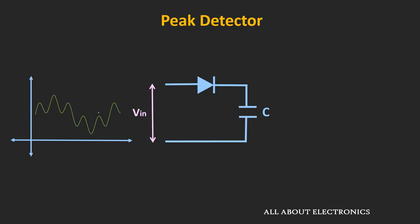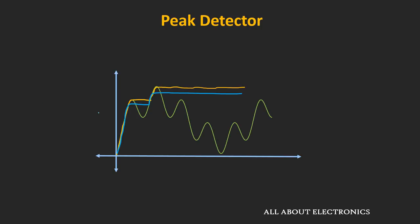So far we have assumed that the diode is an ideal diode, but actually there will be some voltage drop across this diode, and because of that, the output will be slightly less than the expected value. This circuit is good enough for getting a rough approximation of the peak value, but if you want to accurately measure the peak value, then instead of this normal diode, the precision diode or the super diode should be used.